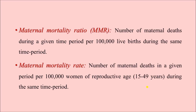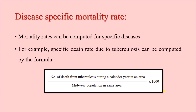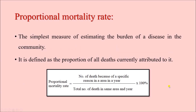The next one is the disease-specific mortality rate. We can calculate mortality rate for specific diseases. For example, the tuberculosis-specific death rate is calculated as: number of deaths from tuberculosis during a calendar year in an area, divided by the mid-year population in the same area, multiplied by 1000. The denominator and multiplication factor are the same as crude death rate, but the numerator specifies the cause of death — in this case, tuberculosis.